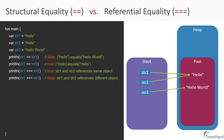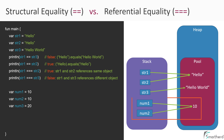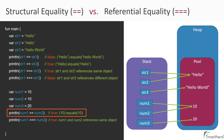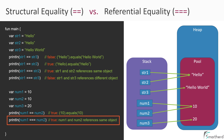Similar to strings, the same principle applies for integers, long values, byte values, and so on. For example, num1 and num2 are both 10, and num3 is 20. So num1 and num2 will point to one object with the value 10, and num3 refers to 20. Comparing num1 == num2 will be true, and comparing num1 === num2 referentially will also be true, as they point to the same object.